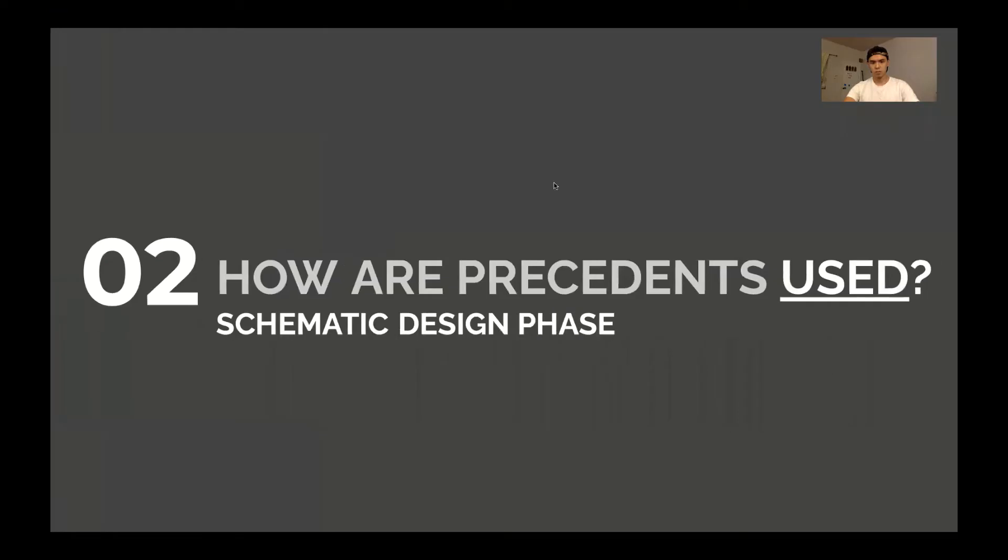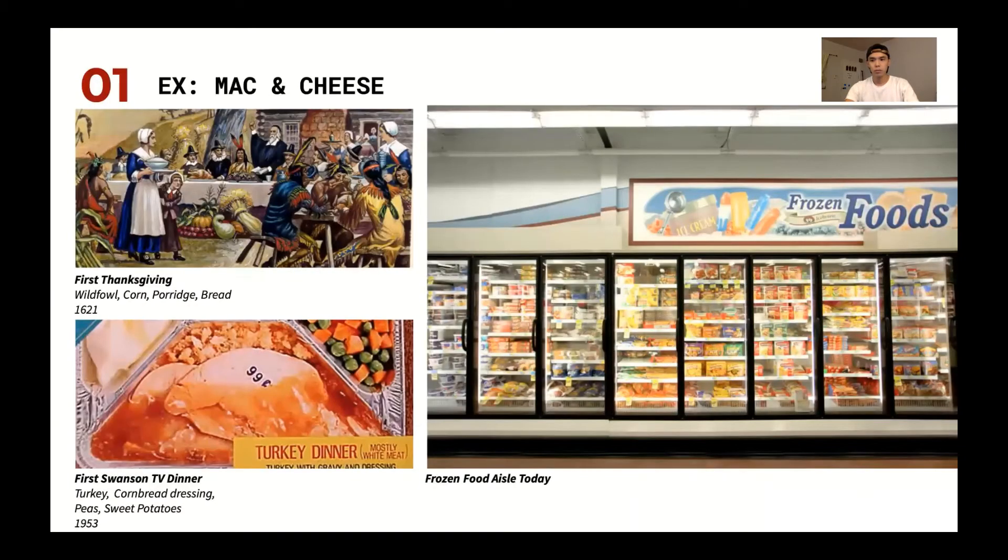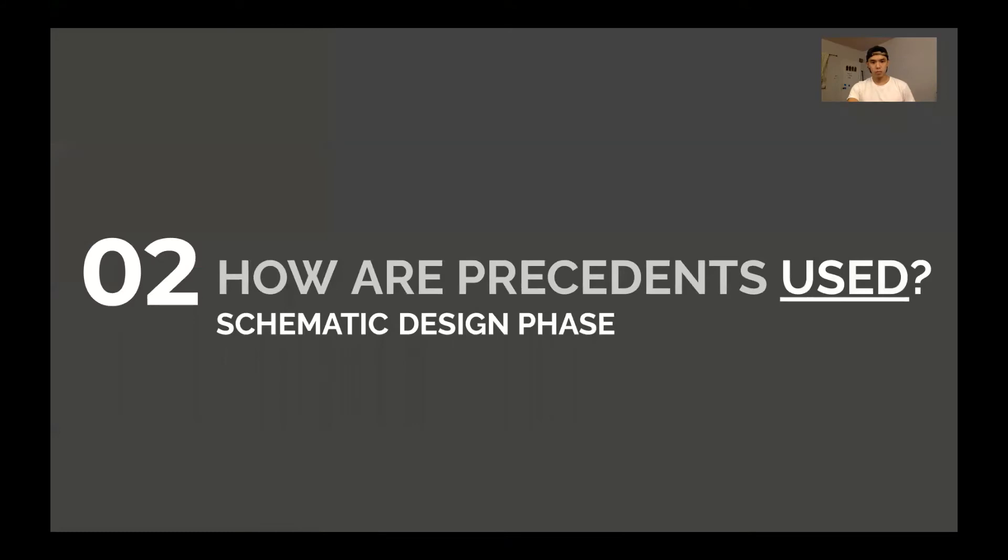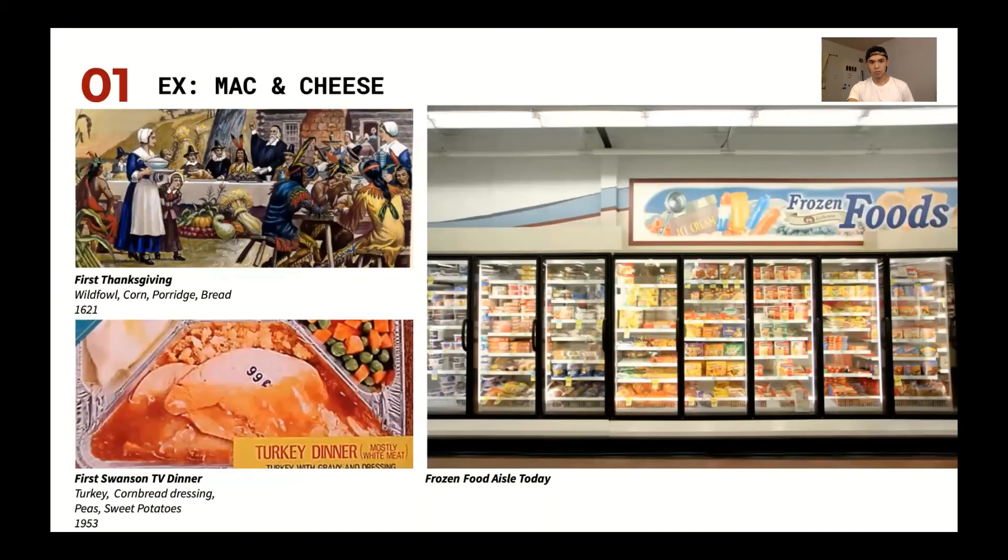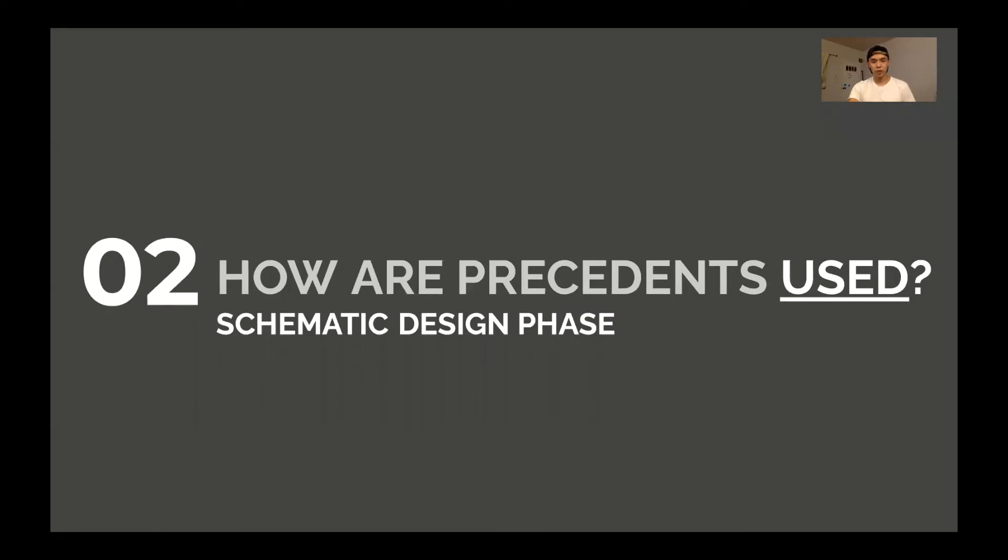This next section will actually be broken up into three different phases of the project: schematic design, design development, and construction implementation. And so each section will have its own activity. I'll walk you through how the precedents are used, and then you'll have a chance to see some ideas that I put down and then have a chance to actually do it yourself.